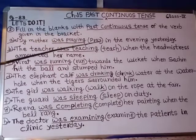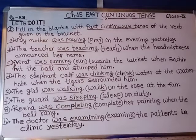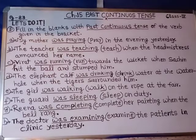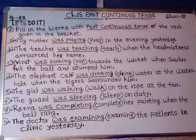Students, here we have to fill the blanks with past continuous tense by taking the help of the verb given in the bracket. In the last class we learned the formula for making a positive sentence. Let us remember it once again: subject plus was or were plus the ing form of the verb.